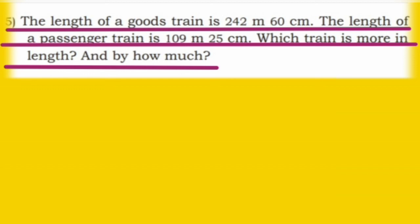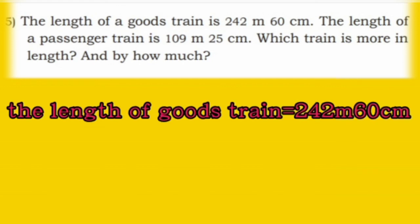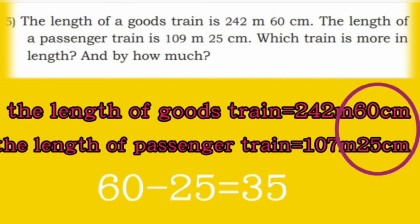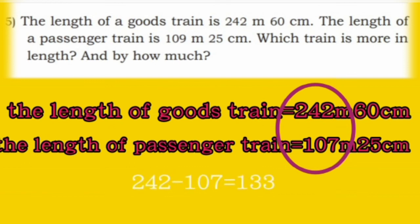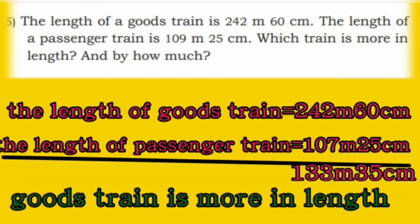Now fifth problem: The length of a goods train is 242 meter 60 cm. The length of a passenger train is 109 meter 25 cm. Which train is more in length and by how much? First subtract centimeters: 60 minus 25, that is 35 cm. Now subtract meters: 242 minus 107, that is 133 meter. So the goods train is more in length.